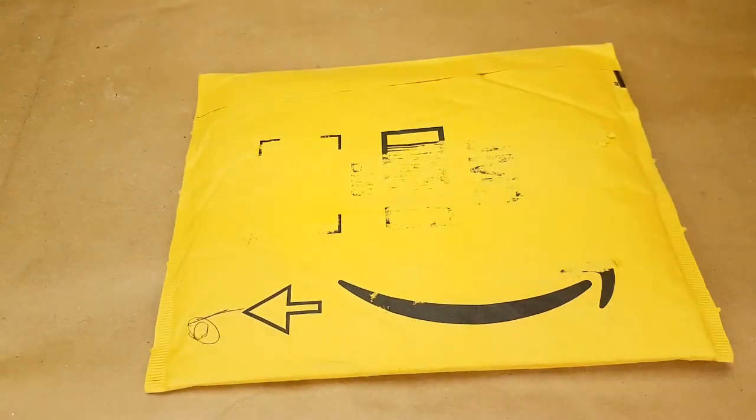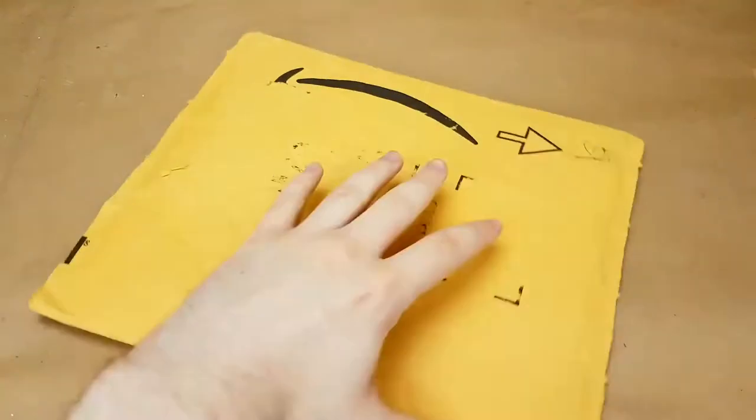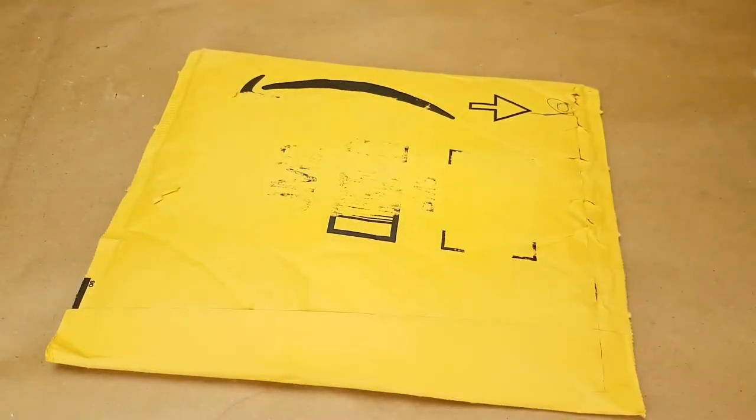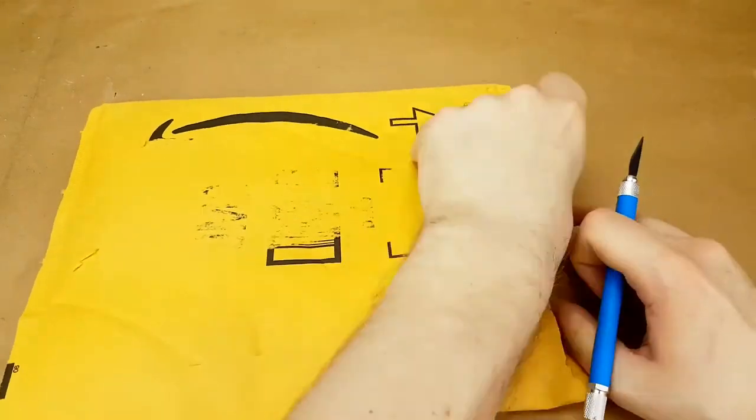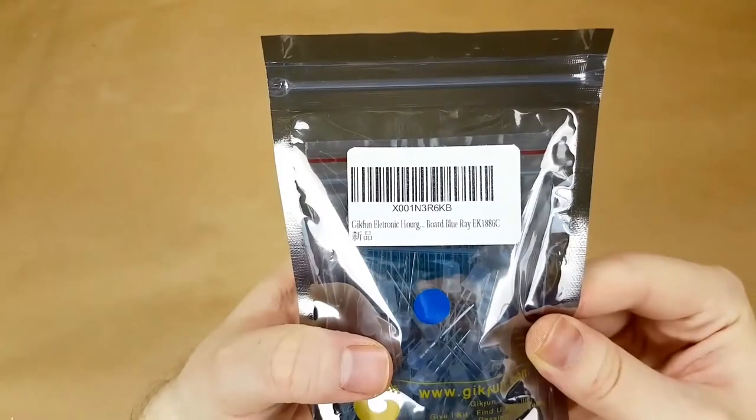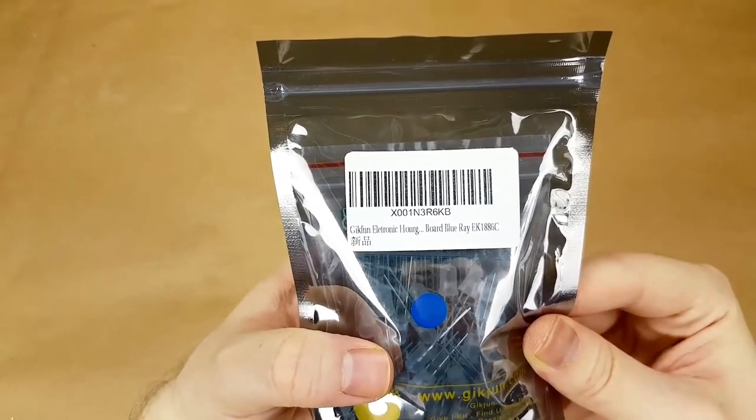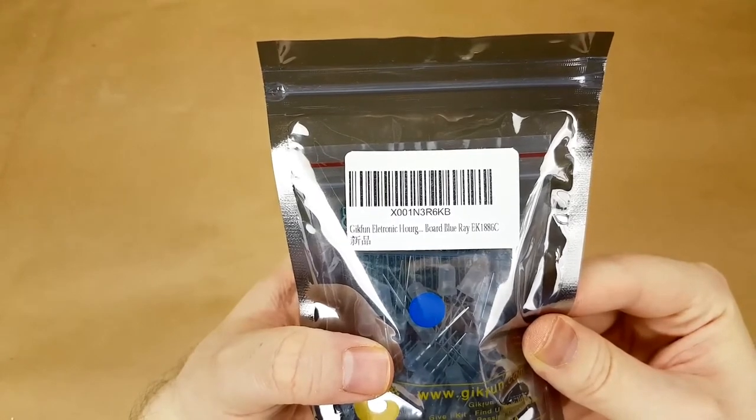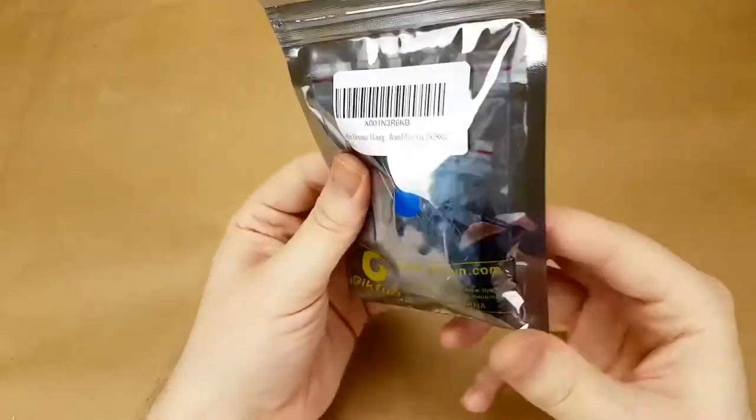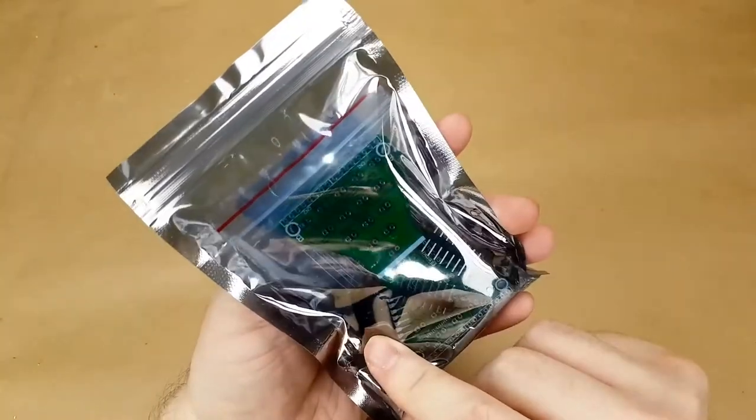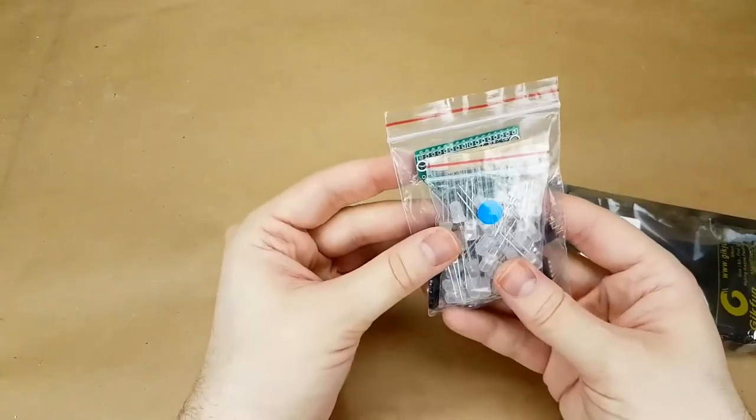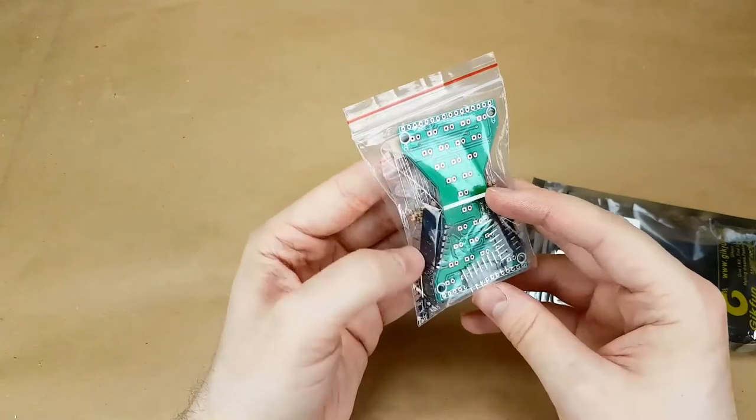This is a much bigger envelope. This one is from Amazon. Well, that didn't work at all. From Amazon, it is a Geekfun Electronics Hourglass Board Blu-ray. I don't know why it says Blu-ray. Maybe just because the LEDs are blue. Soldering practice kit.